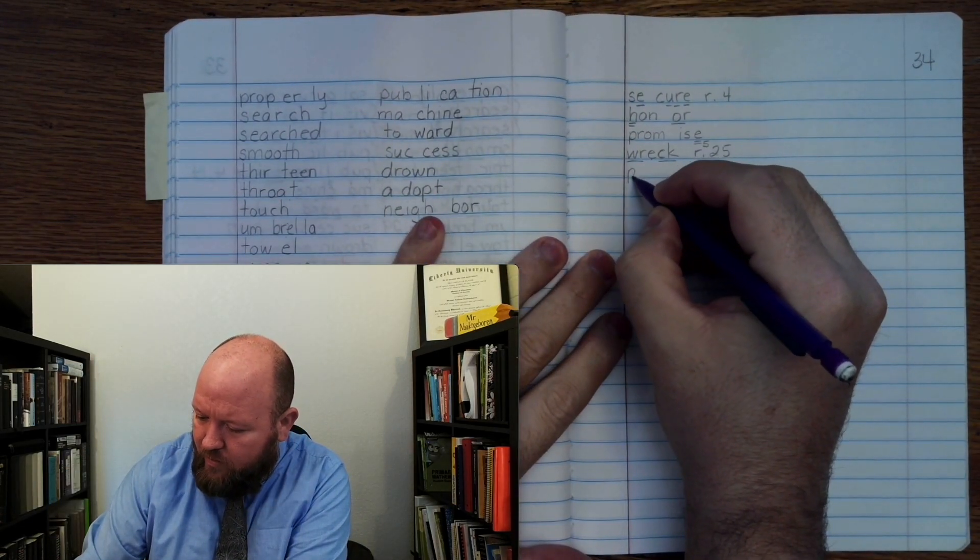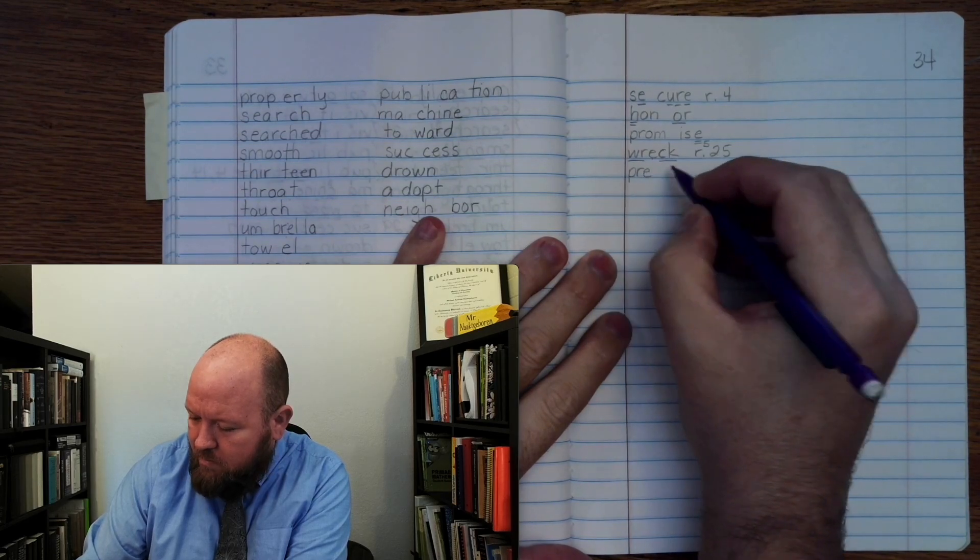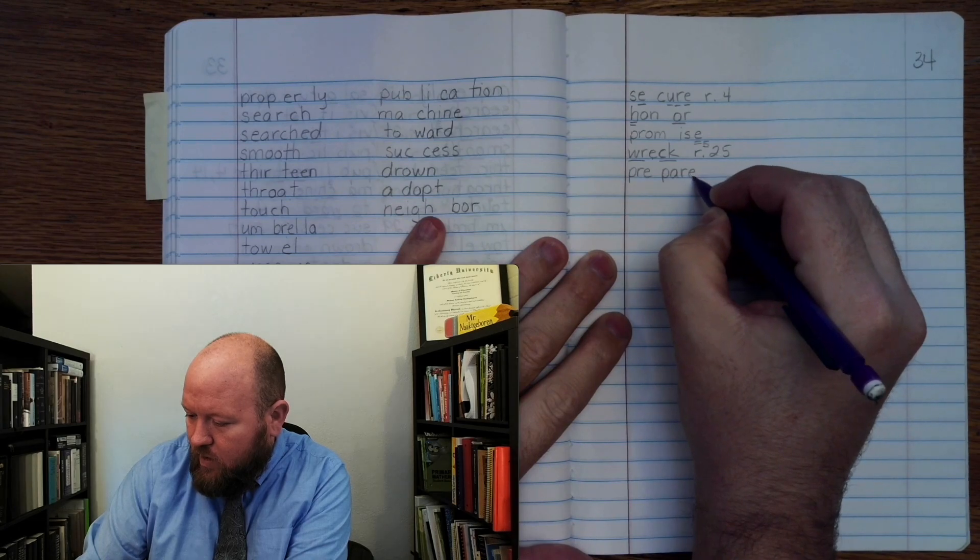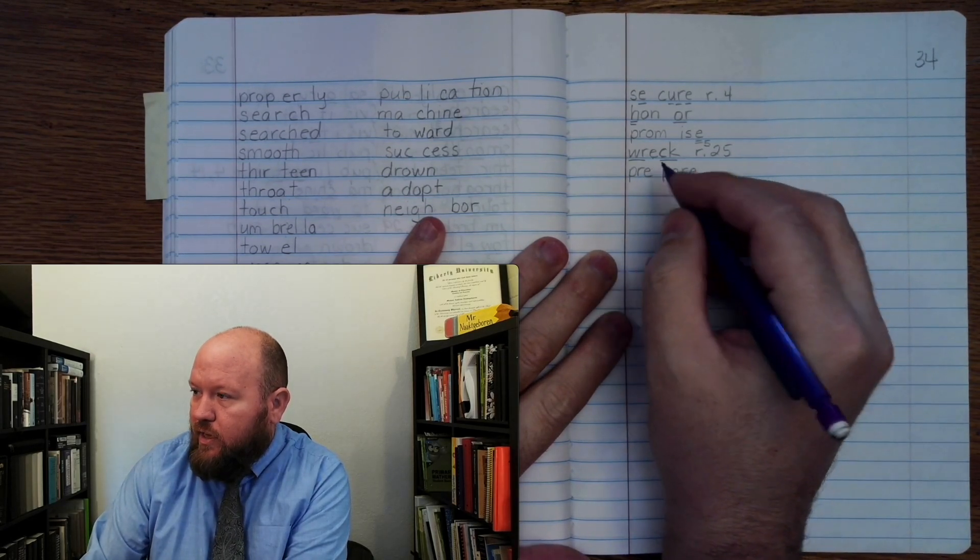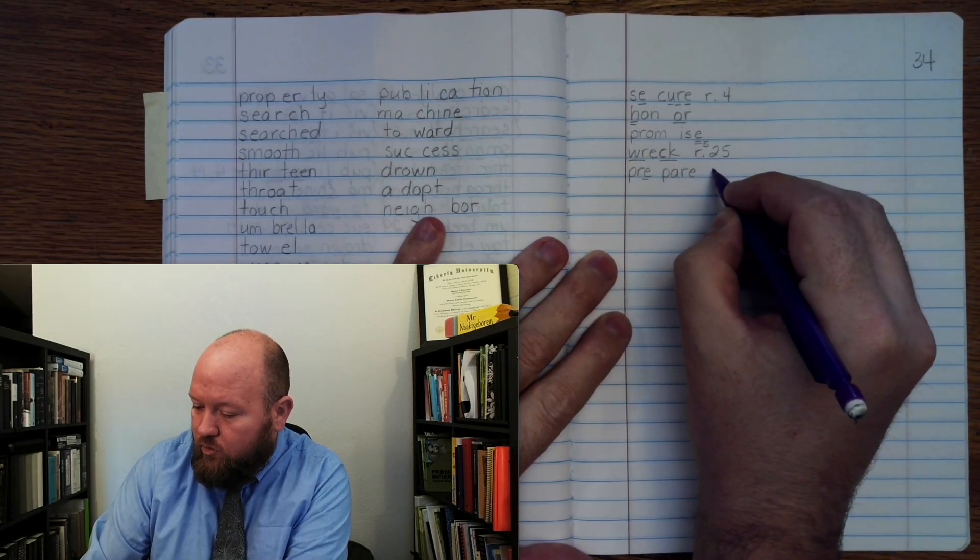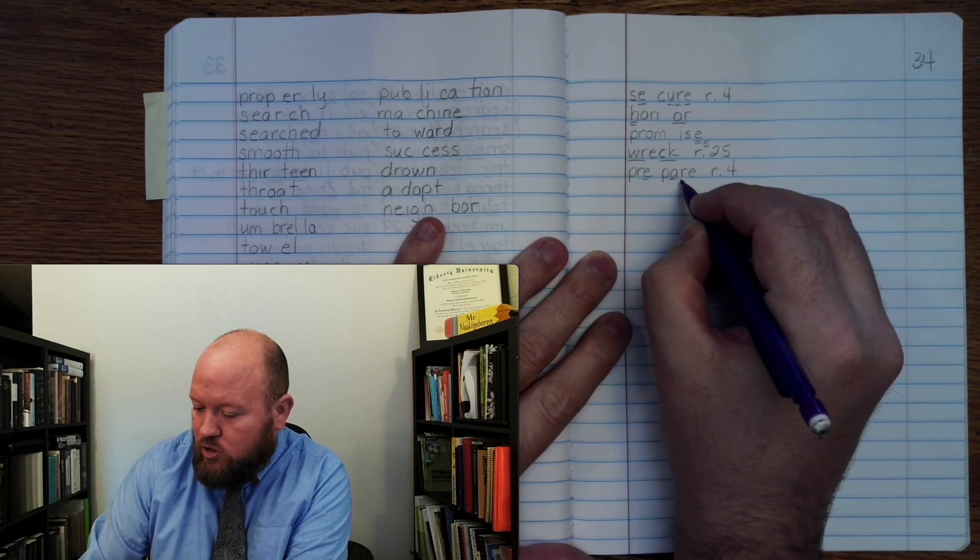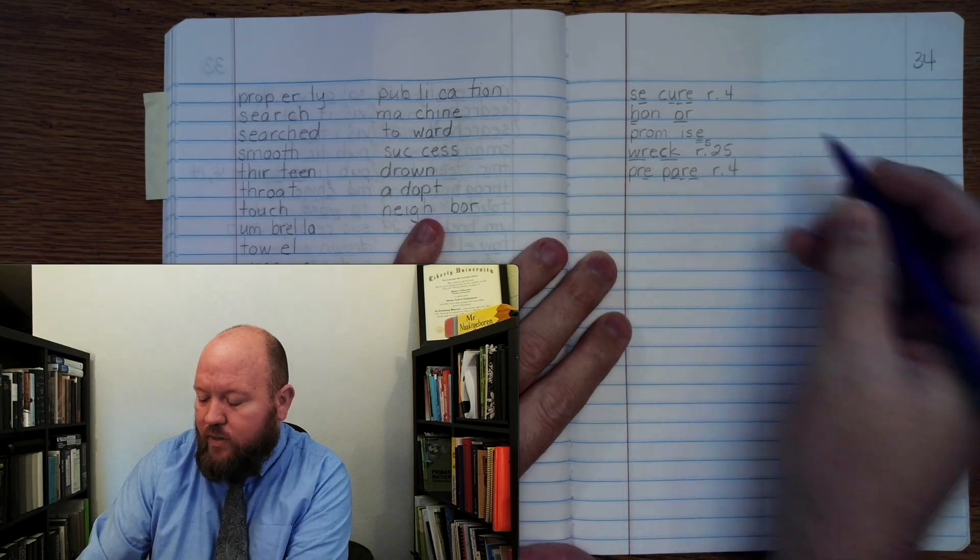Prepare. Pre-pare. P, R, E once. Rule four. P, A once. R once. E once. Prepare.